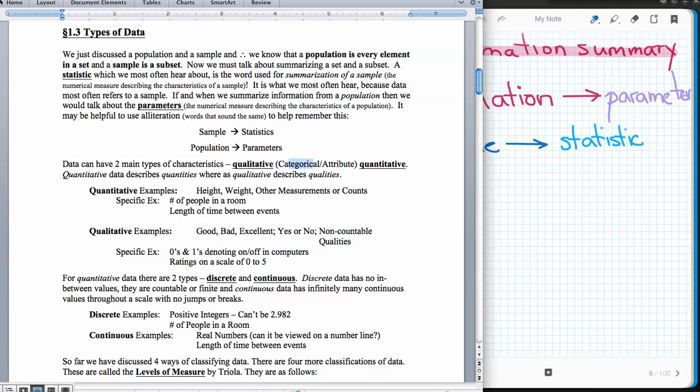For instance, a specific example would be zeros and ones denoting on and off in a computer. That's like a yes-no answer, but they're denoted with numbers. Those numbers don't have any meaning to us. They're just placeholders. Another one is rating on a 0 to 5 scale. A lot of surveys ask you to rate things on a scale of 1 to 5 or 1 to 10. Those are examples with qualitative that you might not expect.